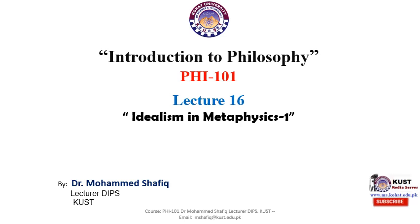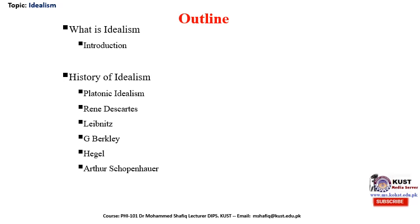The outline of this lecture is as follows: first we are going to introduce what is idealism, then we will look into the history of idealism and the different schools of thought pioneered by different philosophers. First we are going to look into Platonic idealism, presented by the famous Greek philosopher Plato. Then we will discuss René Descartes' idealism, who is considered to be the father of modernity.